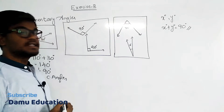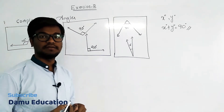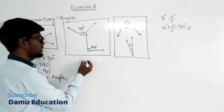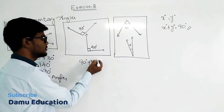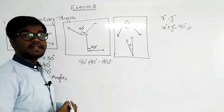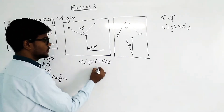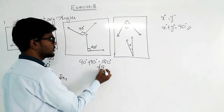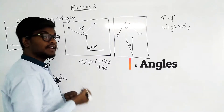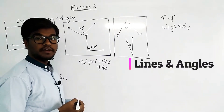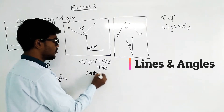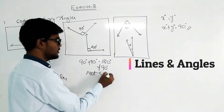The second pair is 90 degrees and 90 degrees. Add 90 plus 90 degrees and you will get 180 degrees. That is not equal to 90 degrees, so the given two angles are also not complementary angles.